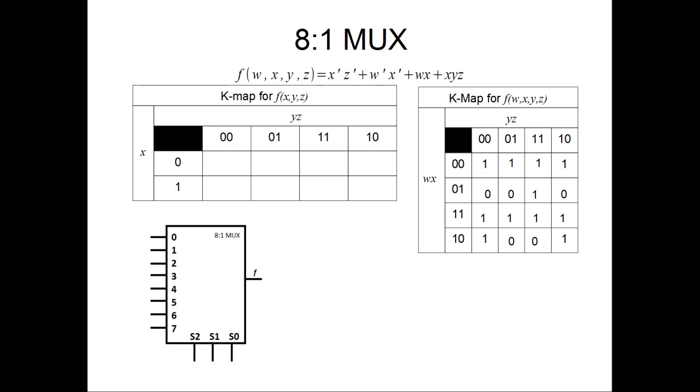In our next implementation, we will be using the 8 to 1 MUX. In an 8 to 1 MUX, we only have three select bits to use. This means that we can only use three of our Boolean variables. The 8 to 1 MUX and 16 to 1 MUX should represent the same Boolean function. We will use a modified K-map for this function. We removed w from the select bits and are only using x, y, and z.